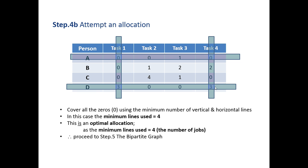We once again attempt an allocation. In this scenario it takes 1, 2, 3, 4 lines to cover all the zeros. We have used a minimum of 4 lines to cover the zeros and there are 4 jobs. This is an optimal allocation because the minimum lines used equals the number of jobs.